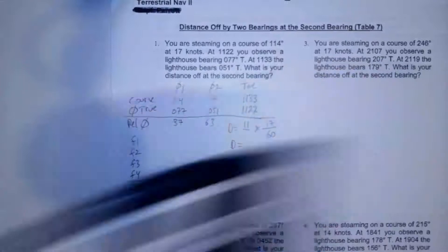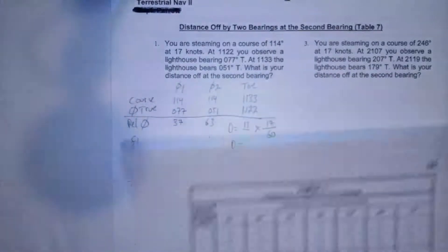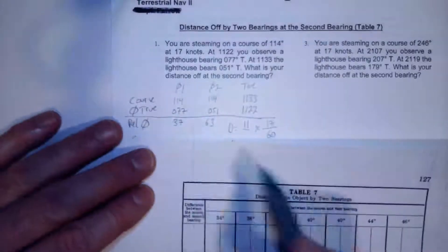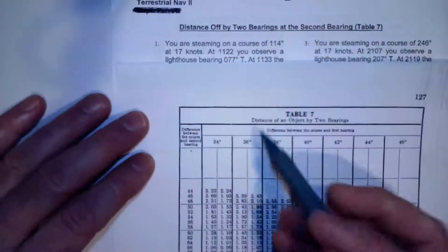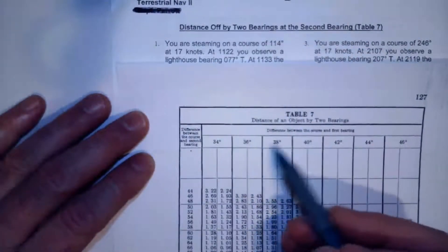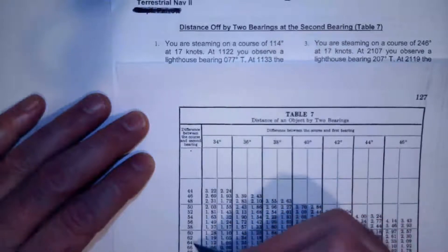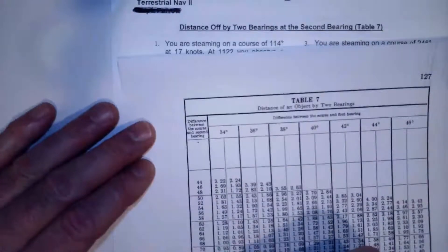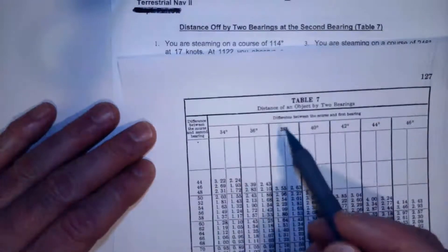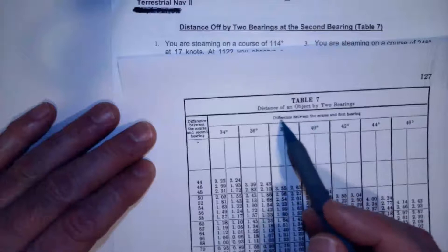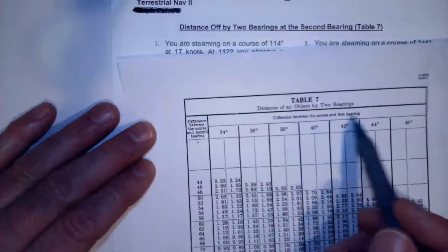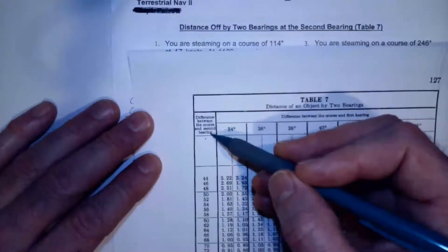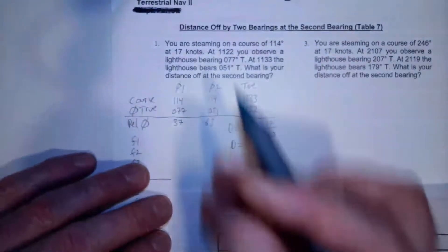Now I'm going to go into the table to get my factors. So I have to go to this table here, and of course I want 37, 63. Well, there's 36 and 38, there is no 37, and there's a 60, a 62 and a 64. So enter the table with the difference between first course and first bearing, that's this, enter the difference between the course and second bearing. I'm going to have to do some interpolation.